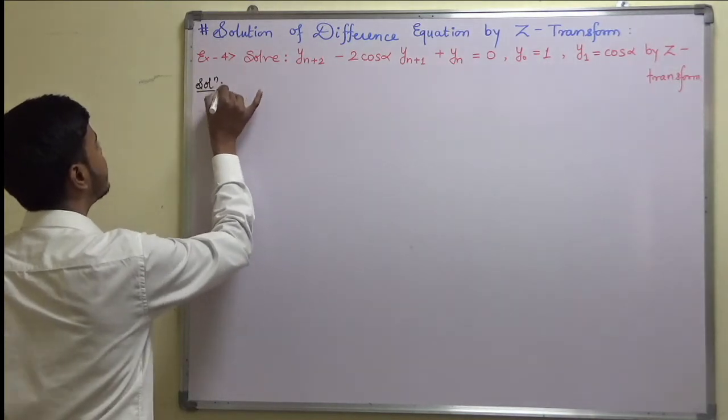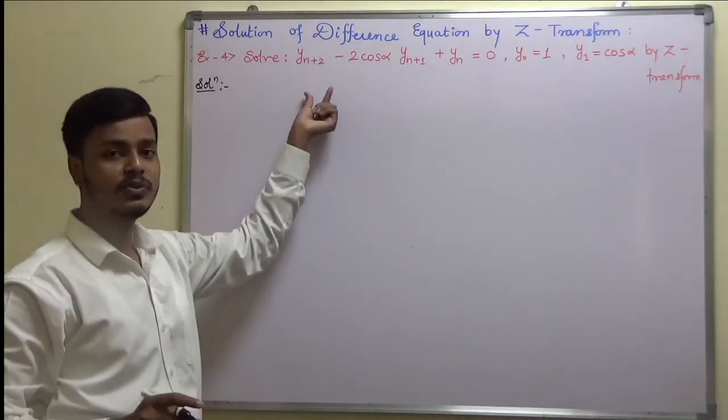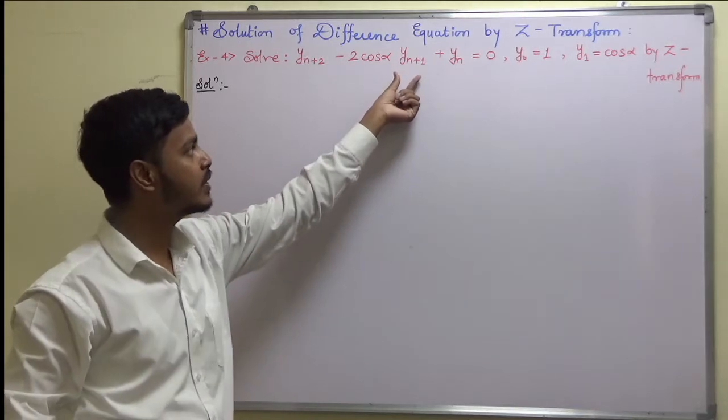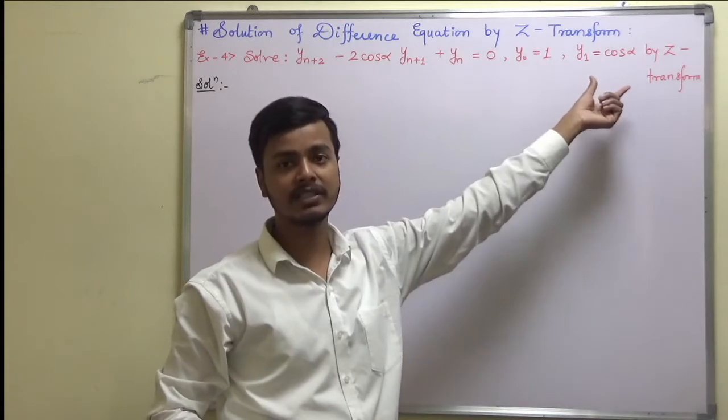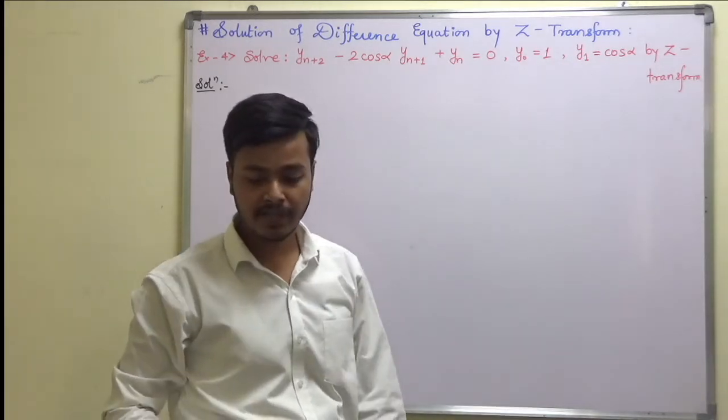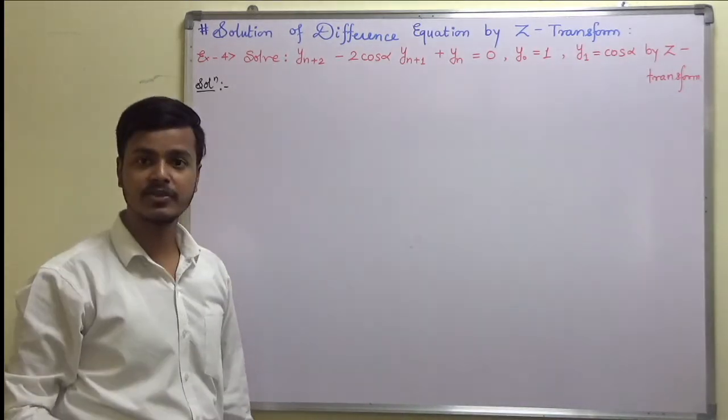Here we have a problem: solve y(n+2) - 2cos(alpha)y(n+1) + y(n) = 0, with conditions y(0) = 1 and y(1) = cos(alpha). We have to solve this by using Z-transform.